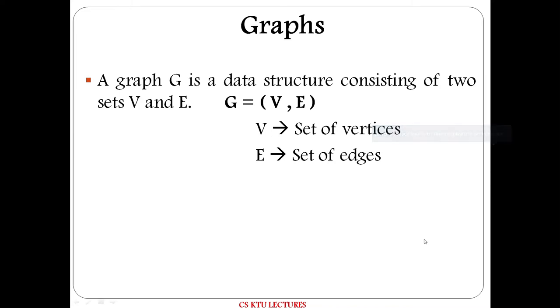Graphs. A graph G is a nonlinear data structure that consists of two sets V and E. G is equal to (V, E). Here V is a set of vertices and E is a set of edges.